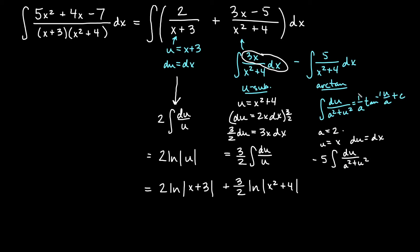So if I go ahead and think about 1 over a, so I have a negative 5 out here, 1 over a would be 1 half, so I would have negative 5 halves inverse tangent, arctangent, of u over a, which is x over 2.